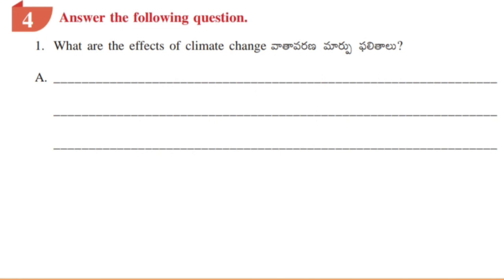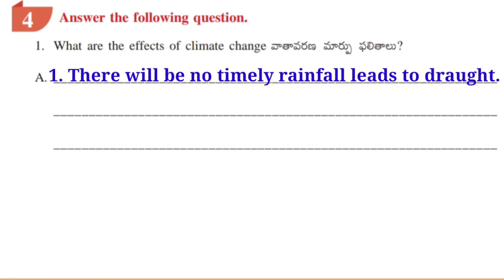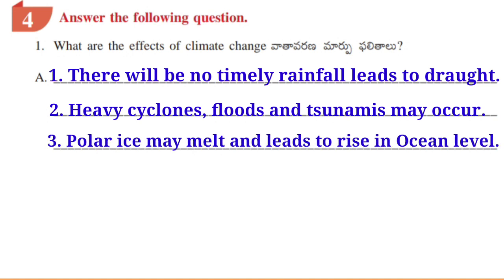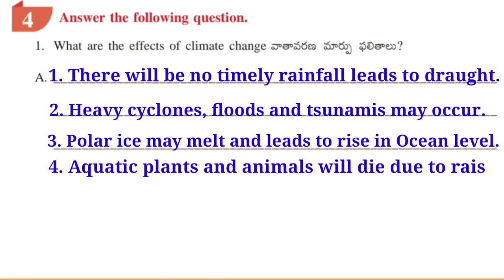Answer the following question: What are the effects of climate change? 1. There will be no timely rainfall, leads to drought. 2. Heavy cyclones, floods and tsunamis may occur. 3. Polar ice may melt and leads to rise in ocean level. 4. Aquatic plants and animals will die due to rise in sea temperature.